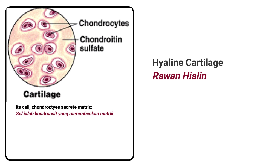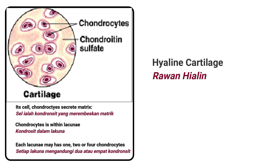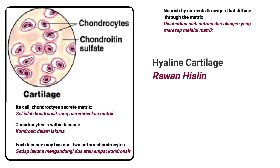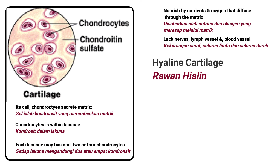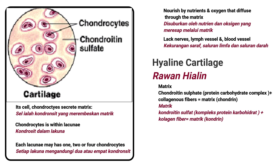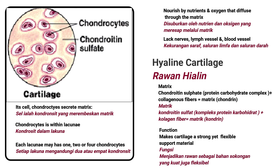Hyaline cartilage — the cell is chondrocytes, which secrete matrix. Chondrocytes are located within lacunae, and each lacuna may have one, two, or four chondrocytes. They are nourished by nutrients and oxygen that diffuse through the matrix. Cartilage lacks nerves, lymph vessels, and blood vessels. The matrix of cartilage consists of protein-carbohydrate complexes and collagenous fibers, making cartilage strong yet flexible.